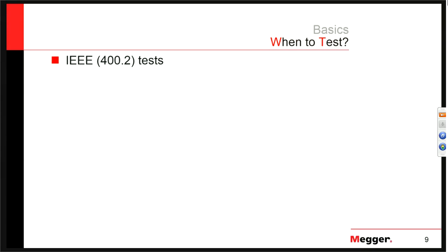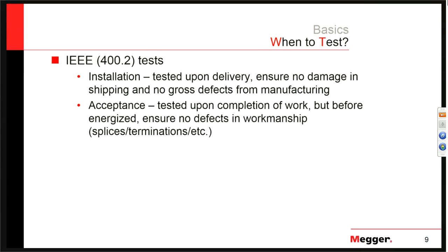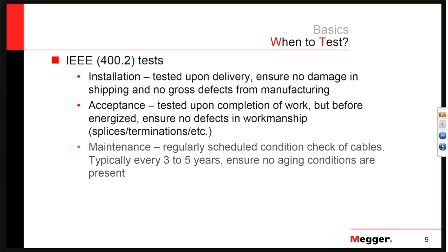When do we test? IEEE standard 400.2 lists three occasions. First is the installation test — basically a delivery test to ensure there's no damage from shipping. Second is the acceptance test — upon completion of work, when the cable is done but before we energize it. These fall under preventative maintenance, trying to pull out faults before energizing. Finally, there's the maintenance test schedule — a somewhat reduced voltage level, regularly scheduled check of the cables, typically every three to five years.